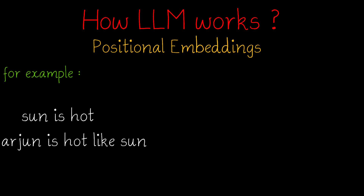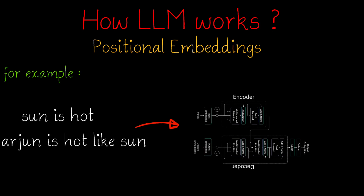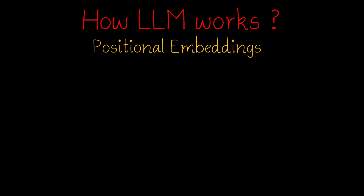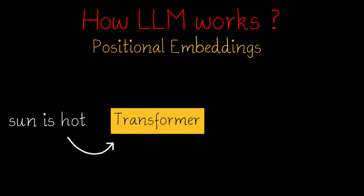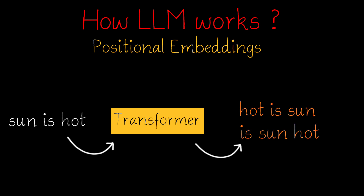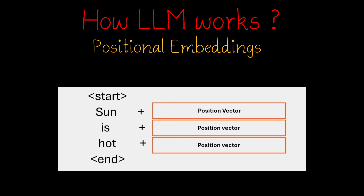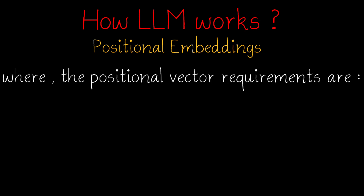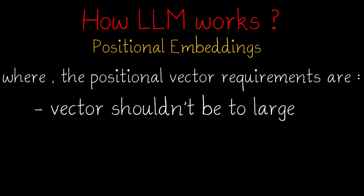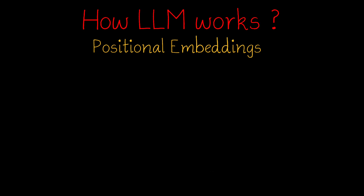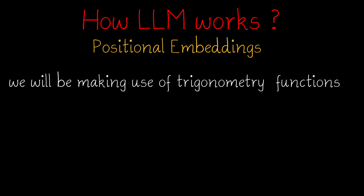Also, the sentences which are inputted to the transformer do not have any positional meaning. For example, if 'sun is hot' is given as input, the transformer has no idea which word comes after what — 'hot is sun', 'is sun hot', etc. can also be possible but make no sense. So the position of each word will be added with some positional vectors in the positional embeddings. These positional vectors have requirements: they shouldn't be too large, each position should be unique, and should be within a range. To satisfy this, we make use of trigonometric functions — sine and cosine functions — whose formulas are as shown.